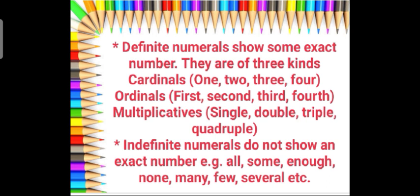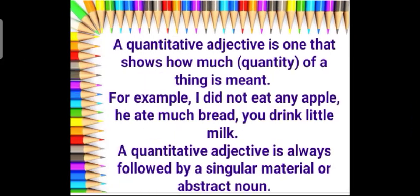Multiplicative numbers are single, double, triple, quadruple. So cardinals, ordinals, and multiplicatives are the types of definite numeral. Indefinite numerals do not show an exact number. For example: all, some, enough, none, many, few, several, etc. As in the previous example — he did not eat any apples, he ate much bread — these are examples of indefinite quantitative adjectives.